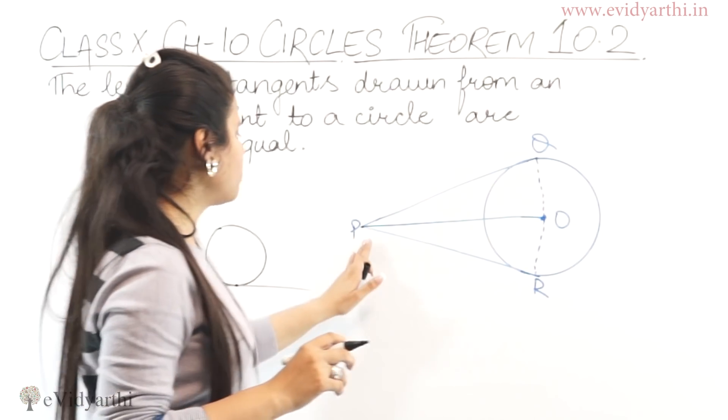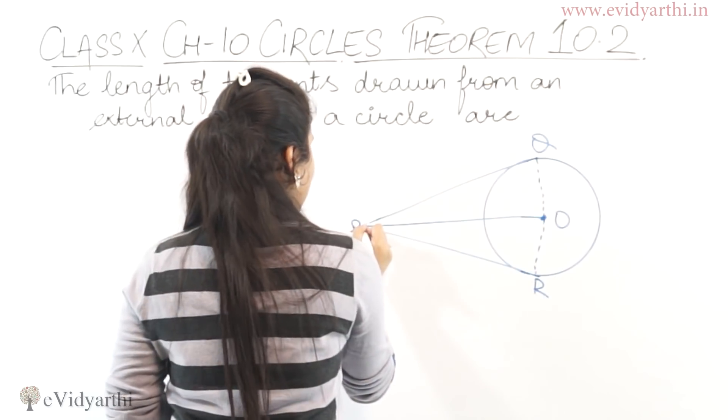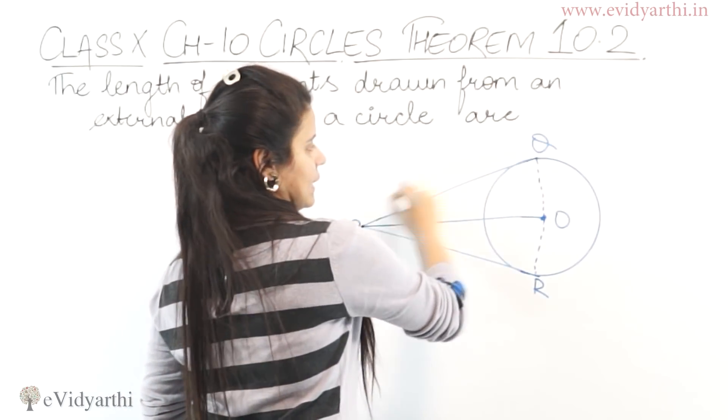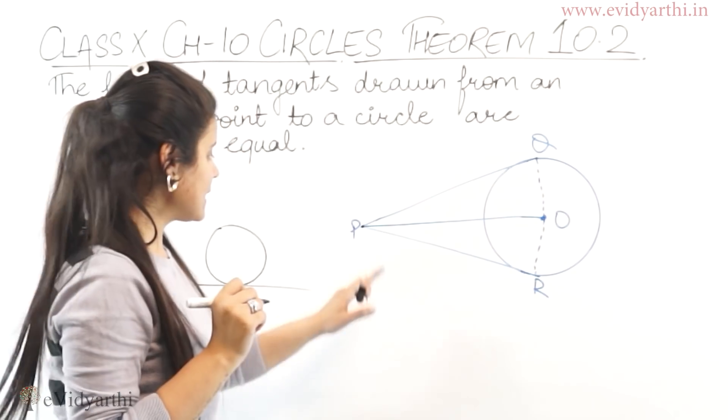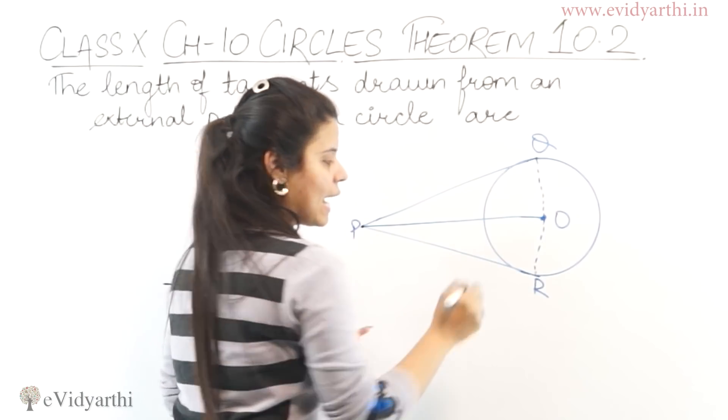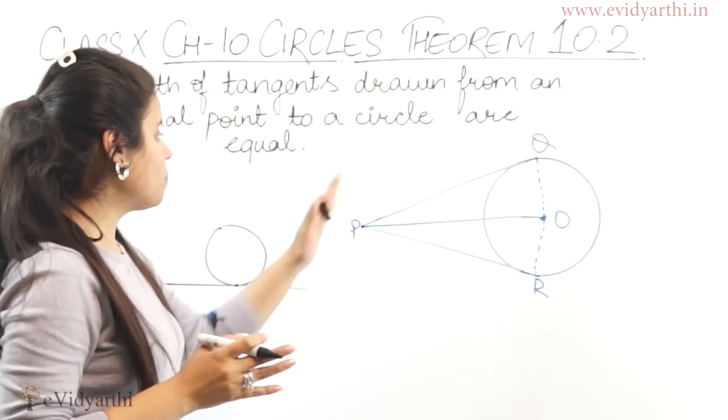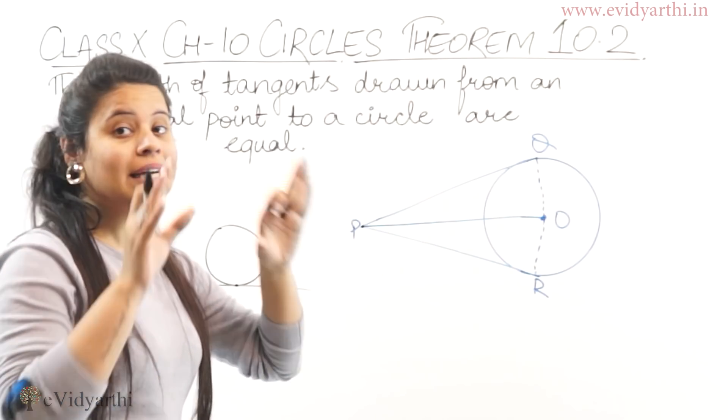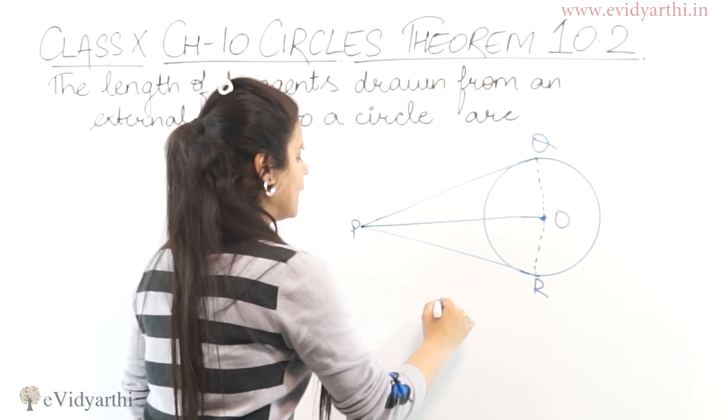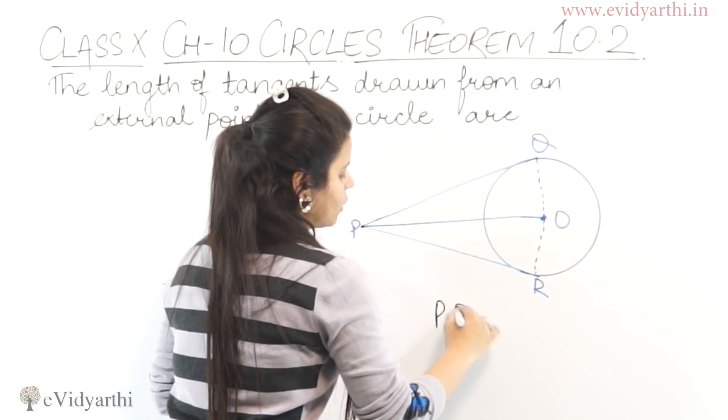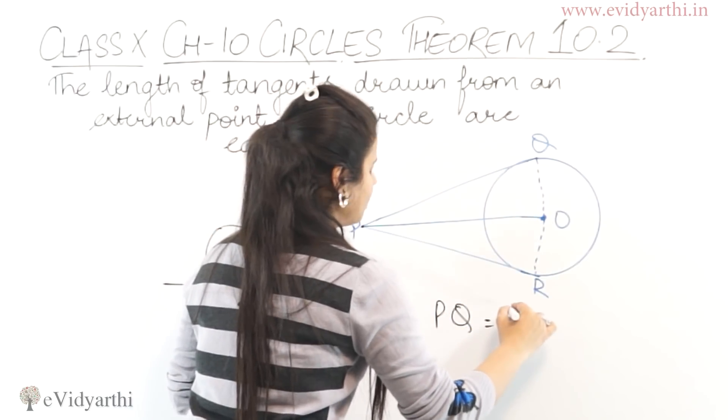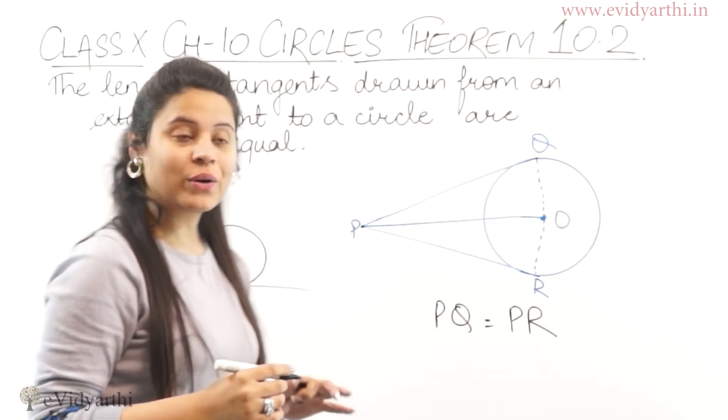If we look at this figure, then P is the external point and this point P to Q is the tangent of the circle. Similarly, P to R is the tangent, so PQ and PR are the tangents. And we will prove that the tangents are equal. So basically, we will prove that PQ is equal to PR.